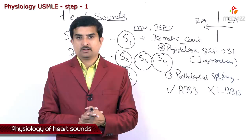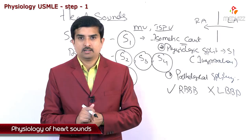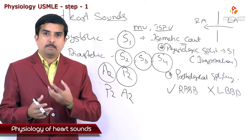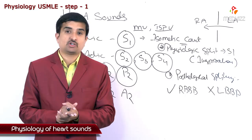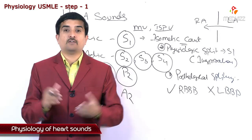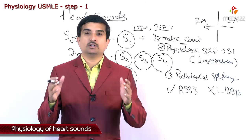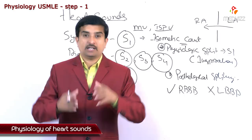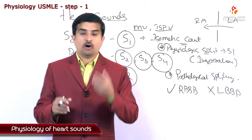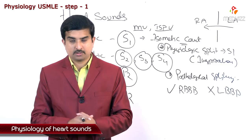There are also extra sounds in cardiovascular physiology. Extra sounds heard during the systolic period include clicks — mid-systolic or late systolic clicks — which are the result of systolic prolapse of the mitral or tricuspid valve and are often accompanied by valvular regurgitation. Extra sounds heard during the diastolic period include the opening snap of the mitral or tricuspid valve, which is indicative of stenosis. This completes the physiology of heart sounds.